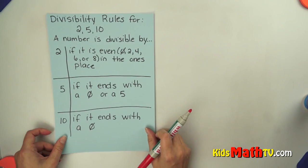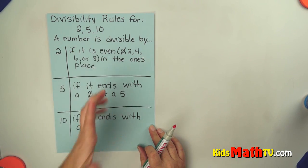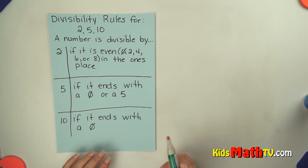In this lesson you will learn about the divisibility rules for 2, 5, and 10. These are the easiest rules of divisibility.